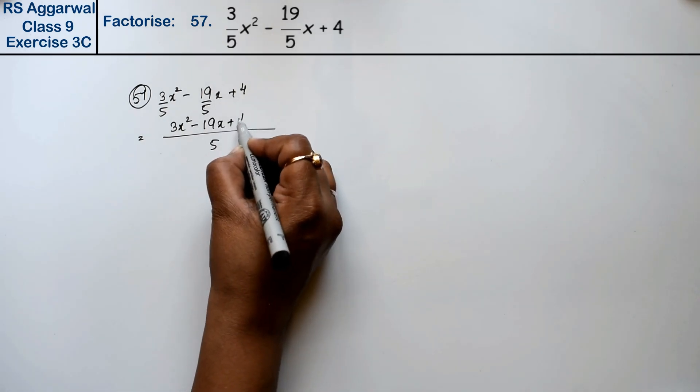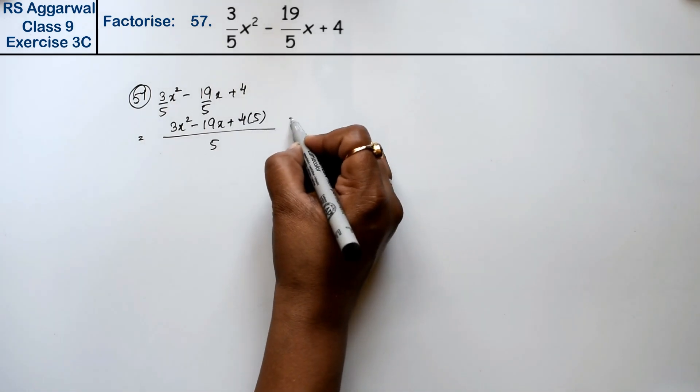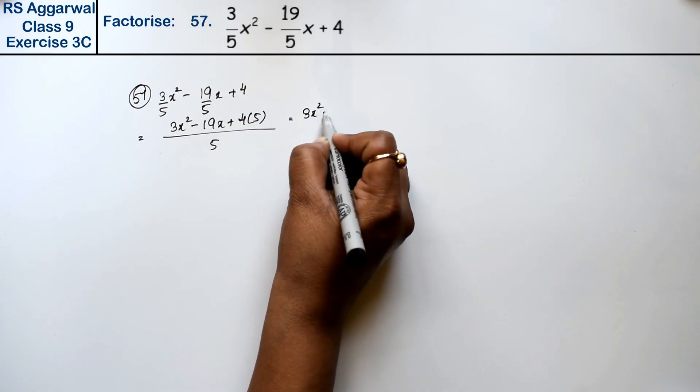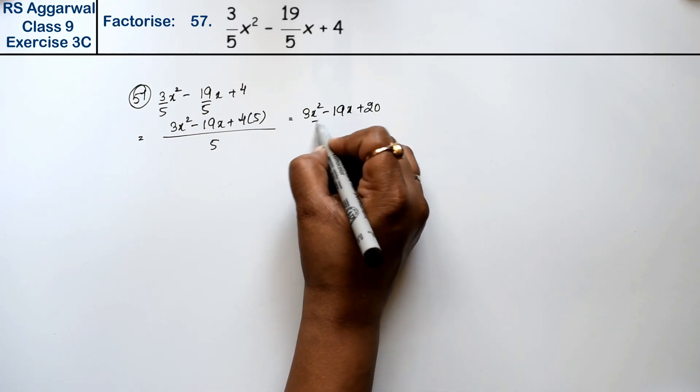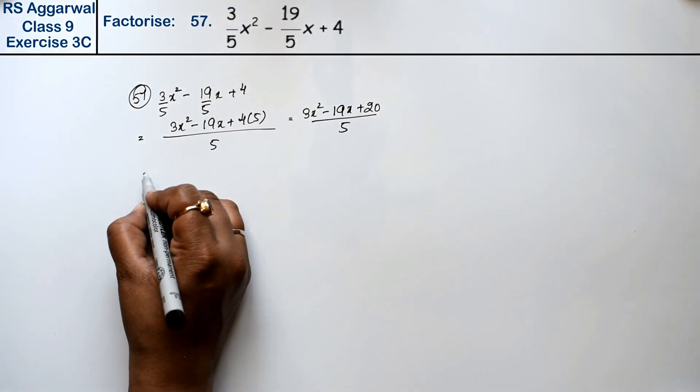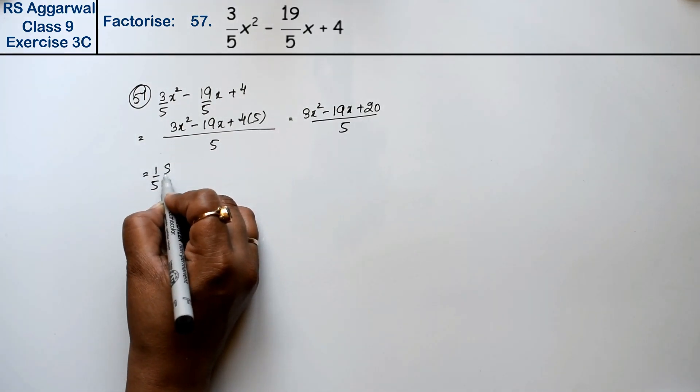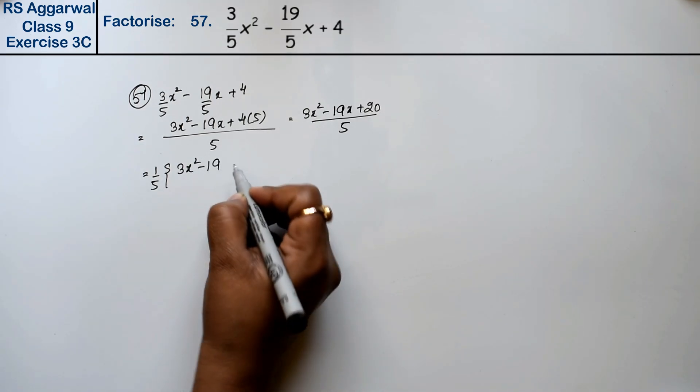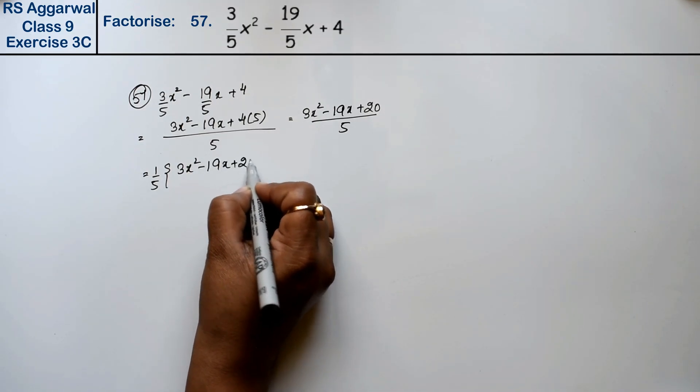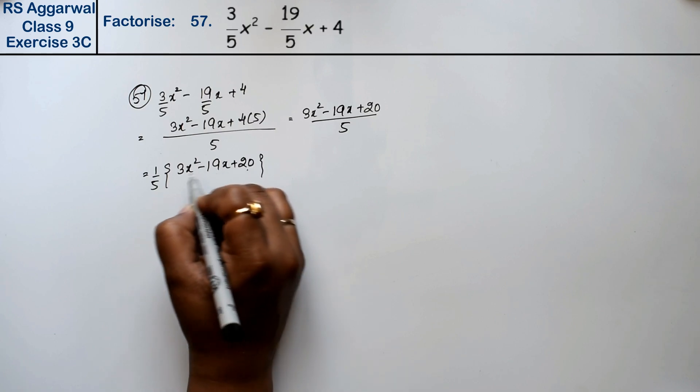Plus 4 into 5, so this becomes 3x² minus 19x plus 20 upon 5. We have taken 1/5 common. So what do we have? 3x² minus 19x plus 20.